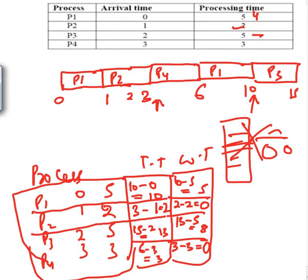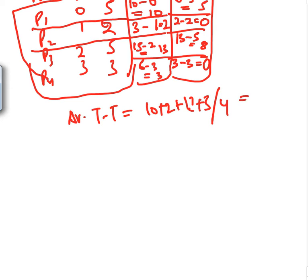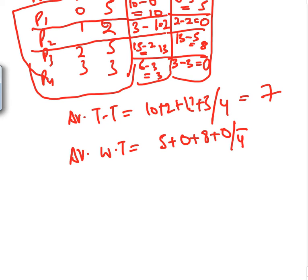Average turnaround time = (10 + 2 + 13 + 3) / 4 = 7. Average wait time = (5 + 0 + 8 + 0) / 4 = 3.25 milliseconds. This shows the improvement SRTN provides.